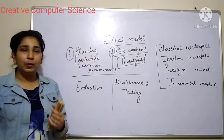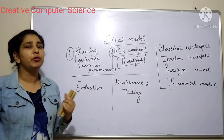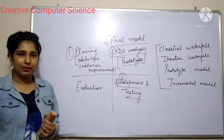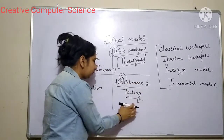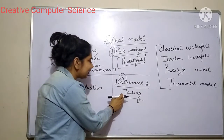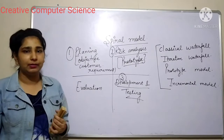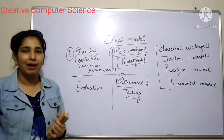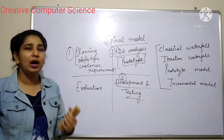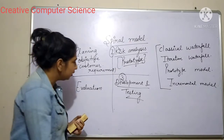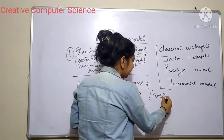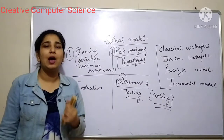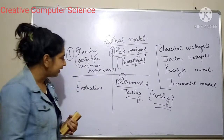Now we have got the solution to all of the problems. The third step is development and testing. What happens in development and testing? We are now going to do coding. We will be doing coding and we will be testing our software product — whether there is any error coming or not. So we will be doing coding and testing in this phase. Now you have implemented your product — you have made your product in the third phase.